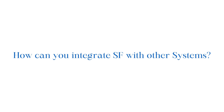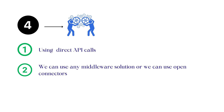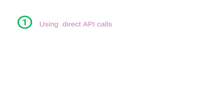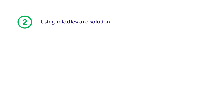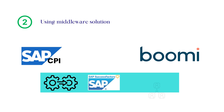In this chapter, I am going to talk about how you can integrate SuccessFactors with other systems. Typically, there are four different ways to integrate SuccessFactors with other systems. The first one is using direct API calls. The second one is using a middleware solution. And we can also use open connectors. In case of direct API calls, we can use OData or SOAP protocol to invoke different APIs on SuccessFactors. In the middleware approach, we can use solutions such as SAP CPI or Dell Boomi to integrate SuccessFactors with third-party solutions.